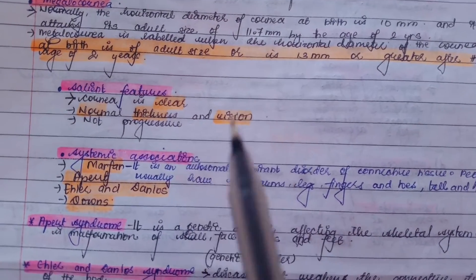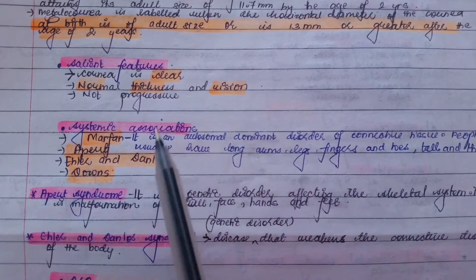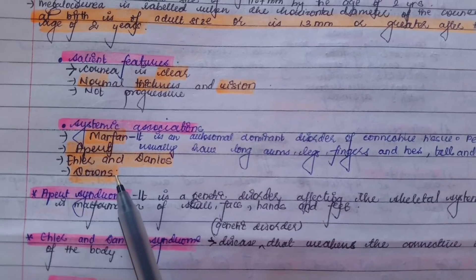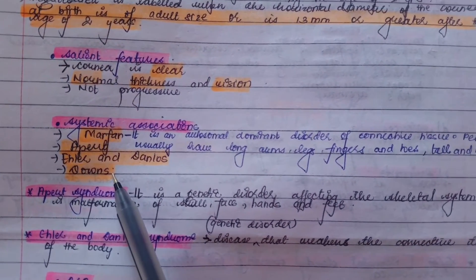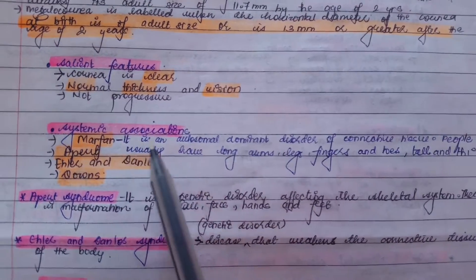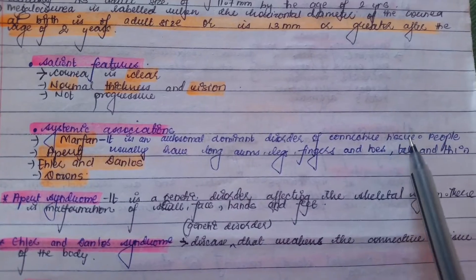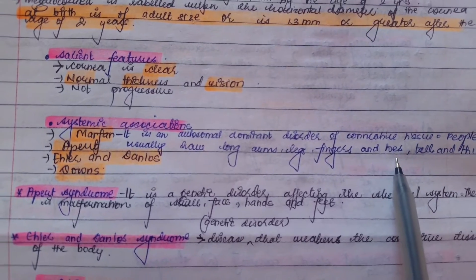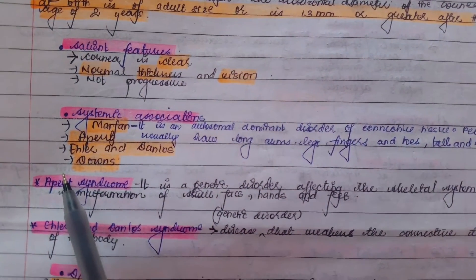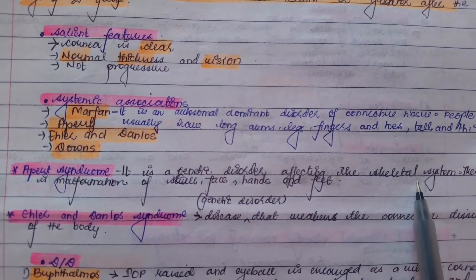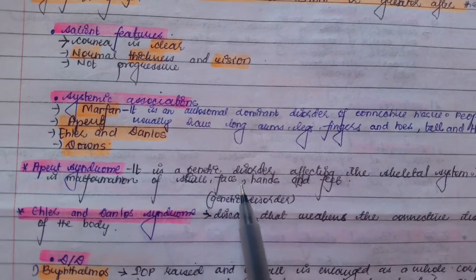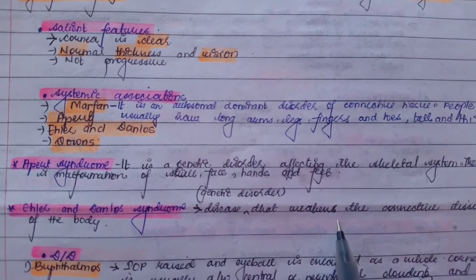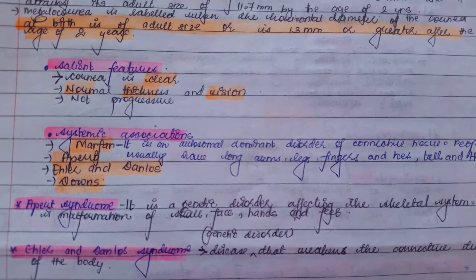Megalocornea is usually associated with various syndromes: Marfan syndrome, Apert syndrome, Ehlers-Danlos syndrome, and Down syndrome. Down syndrome is trisomy 21. Marfan syndrome is an autosomal dominant disorder of connective tissue; people are typically tall and thin with long arms, legs, fingers, and toes. Apert syndrome is a genetic disorder affecting the skeletal system, causing malformation of the skull, face, hands, and feet. Ehlers-Danlos syndrome is a genetic disorder that weakens the connective tissue of the body.